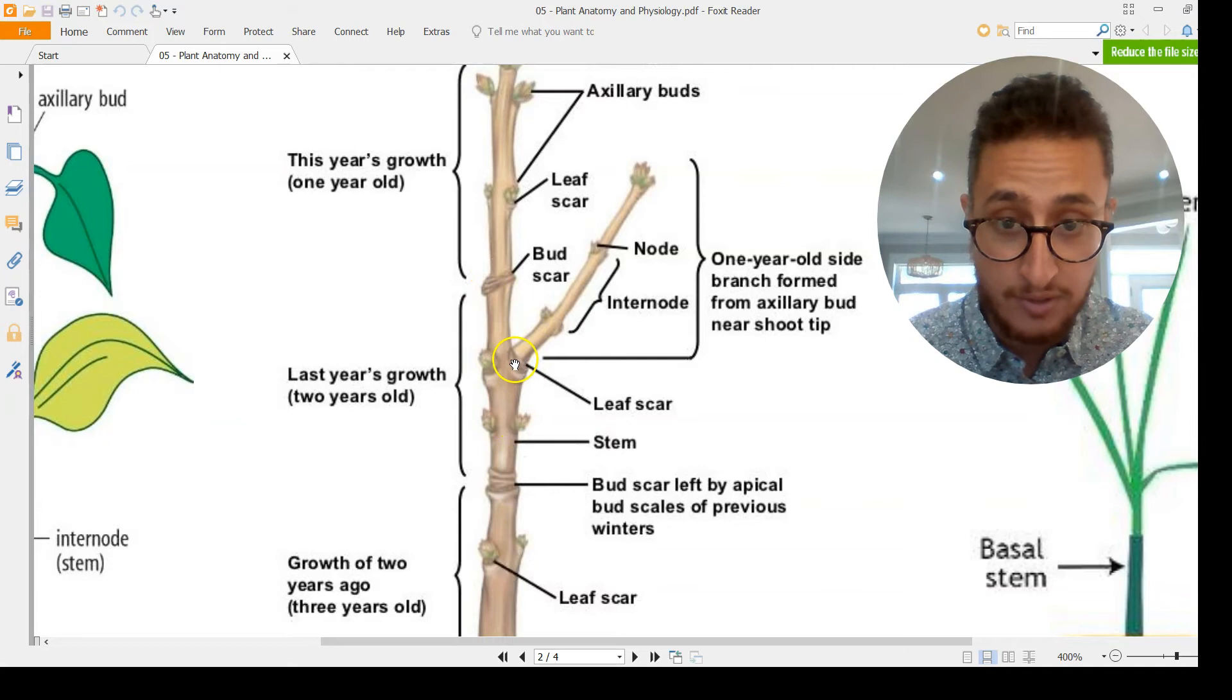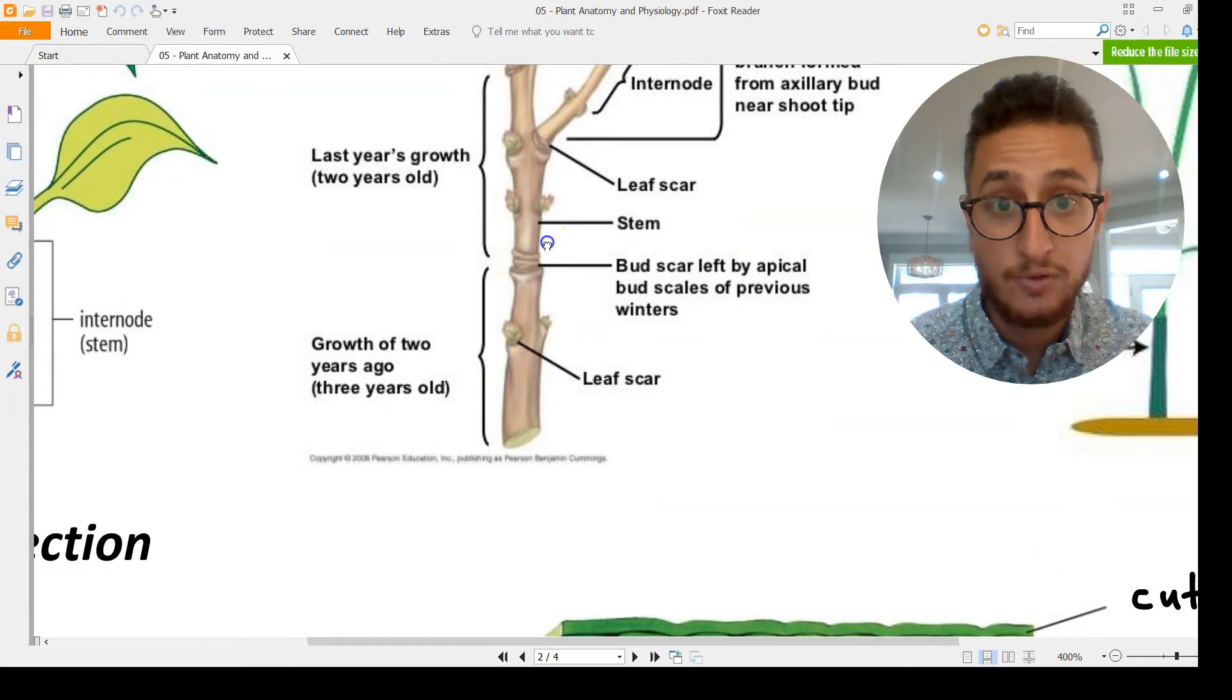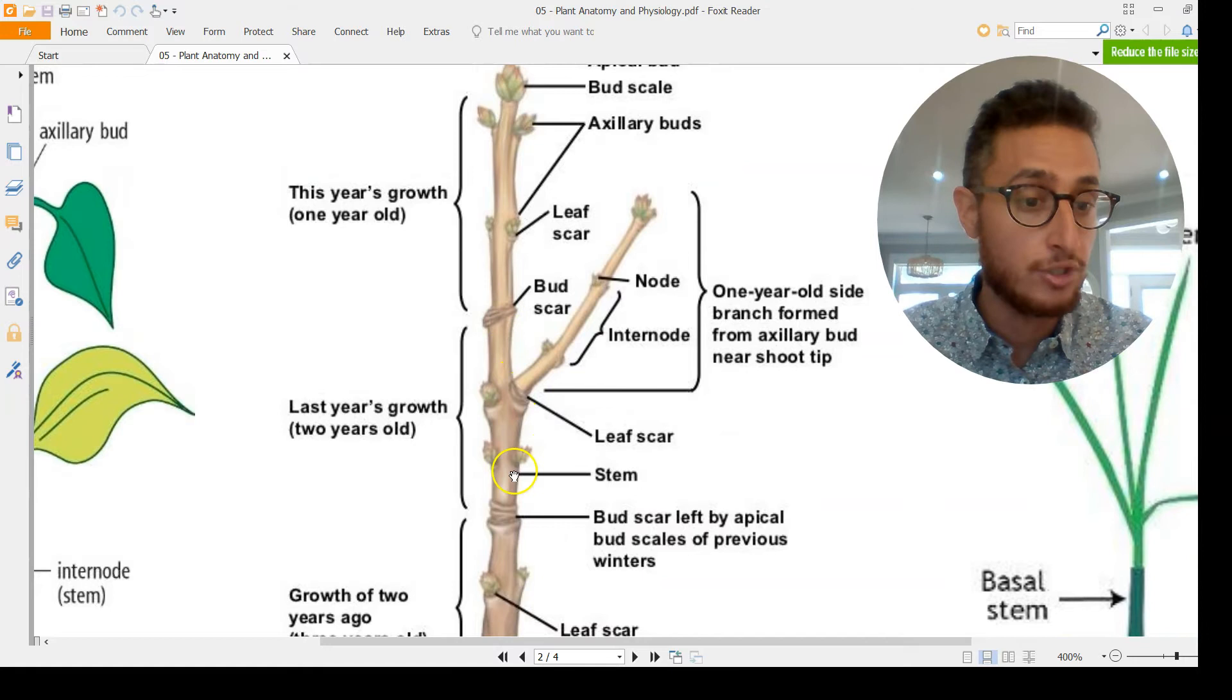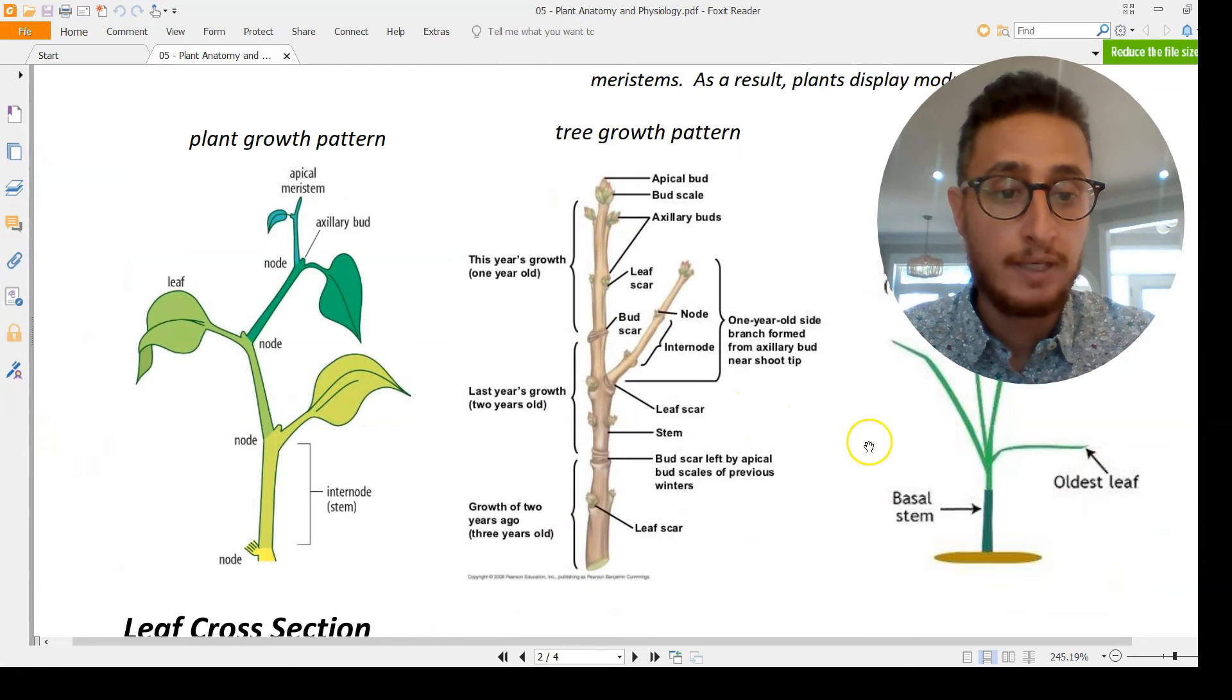In the fall, that leaf has fallen off, but what didn't fall off is this little axillary meristem. That's where next year's growth is going to come from. Anywhere where there was a leaf is where a branch next year might grow. You can actually trace back the growth of plants in different years and see was it a good year or a bad year for growth.